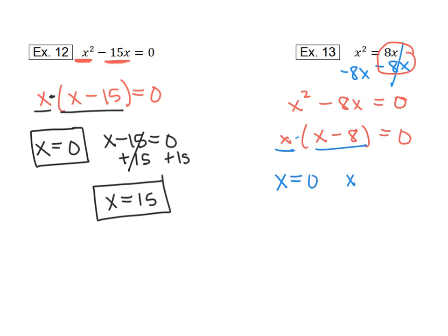x equals 0, and x minus 8 equals 0. That one is solved, so x equals 0 is one of our answers. And then we'll just add 8 to both sides, and we get x equals 8 for our second answer.